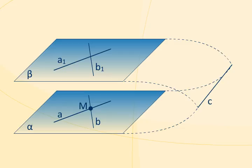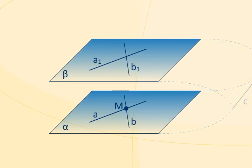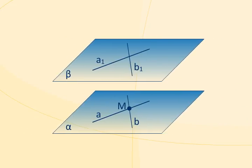Hence, the assumption that the planes intersect was incorrect. This means that the planes do not intersect, and they are parallel.